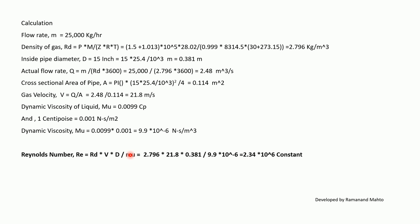Calculation: Flow rate M = 25,000 kg/hr. Density of gas: ρ = P × M / (Z × R × T) = (1.5 + 1.013) × 10⁵ × 28.02 / (0.999 × 8314.5 × (30 + 273.15)) = 2.796 kg/m³.